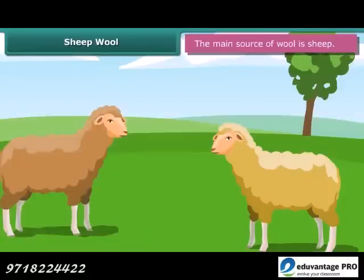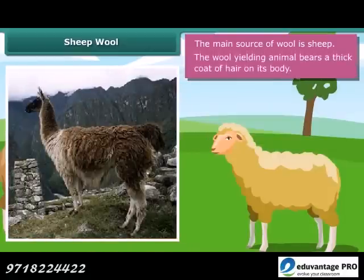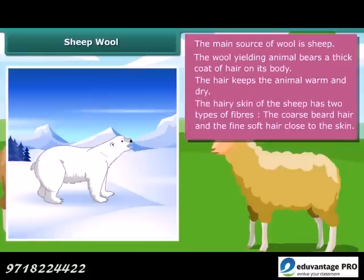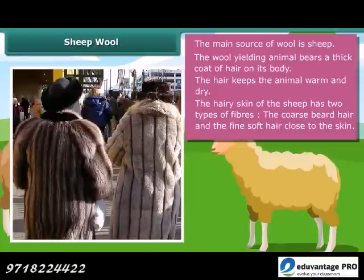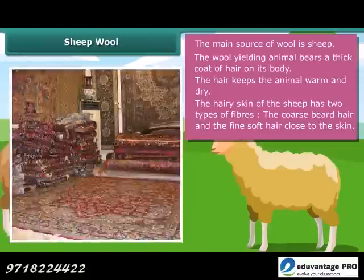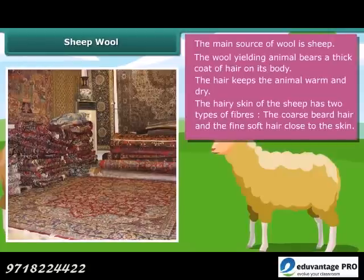The main source of wool is sheep. The wool-yielding animal bears a thick coat of hair on its body. The hair traps air, and since air is a poor conductor of heat, the hair keeps the animal warm and dry, allowing it to live in cold and harsh climates. The hairy skin of the sheep has two types of fibers: the coarse beard hair and the fine soft hair close to the skin. The fine hair provides fibers for wool for making woolen clothes, while coarse hair provides wool for making carpets.